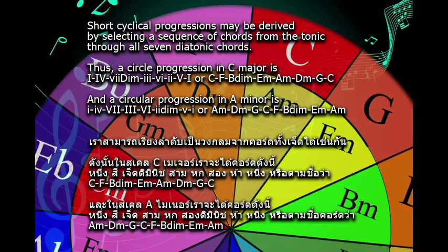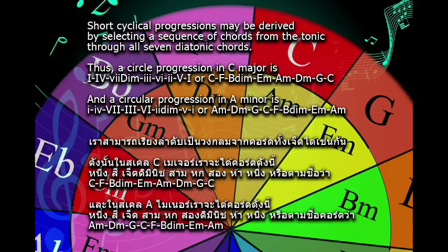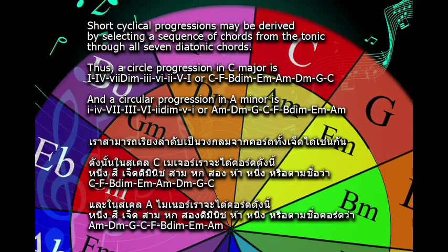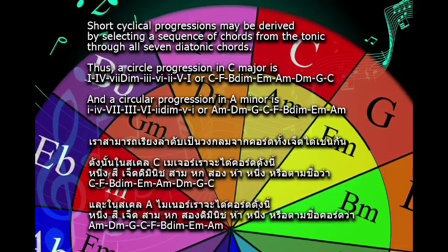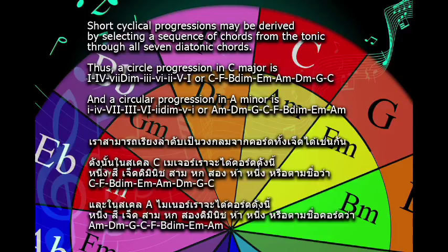In letter names, that circle progression in C major is: C, F, B diminished, E minor, A minor, D minor, G, C.